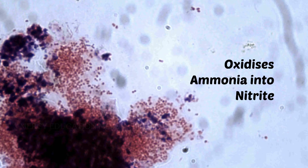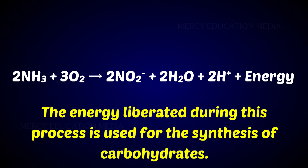Nitrosomonas oxidizes ammonia into nitrite. The energy liberated during this process is used for the synthesis of carbohydrates. The reaction is: ammonia plus oxygen forms nitrogen dioxide plus water plus hydrogen plus energy.